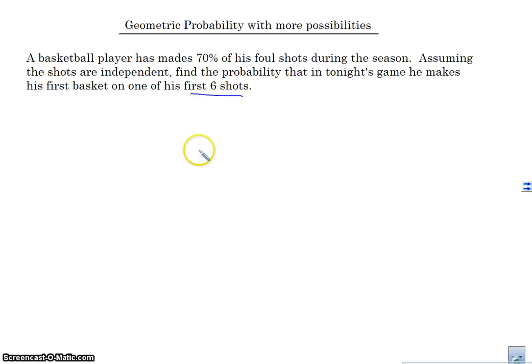So in this case, he doesn't make his first basket on the fifth shot. He makes his first basket on one of the first six shots. So we know that the probability of success is 70%. And the probability of failure, one minus P, which I label as Q, is going to be 30%.